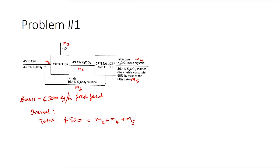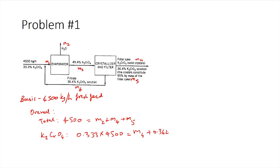We also write the K2CrO4 balance: 0.333 × 4500 = M4 + 0.364 × M5. It is also given that 95% of the mass of the filter cake is constituted by the crystals, meaning M4 = 0.95 × (M4 + M5). We now have two equations to solve for M4 and M5.